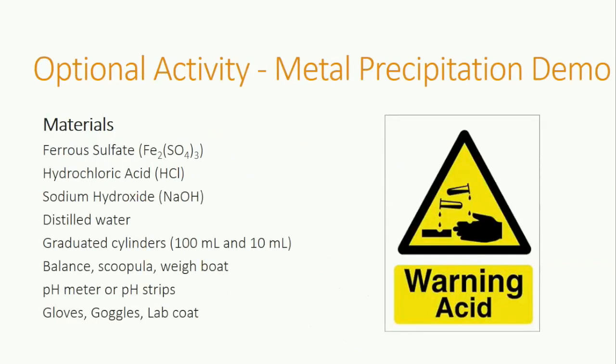To understand how metals precipitate out of acid mine drainage water as the pH increases, complete this activity, either as a teacher-led demonstration or as an experiment for student groups. You will first need to gather materials. Hydrochloric acid and sodium hydroxide are very caustic, meaning you can cause chemical burns if you're not careful. Always wear goggles, gloves, and a lab coat.